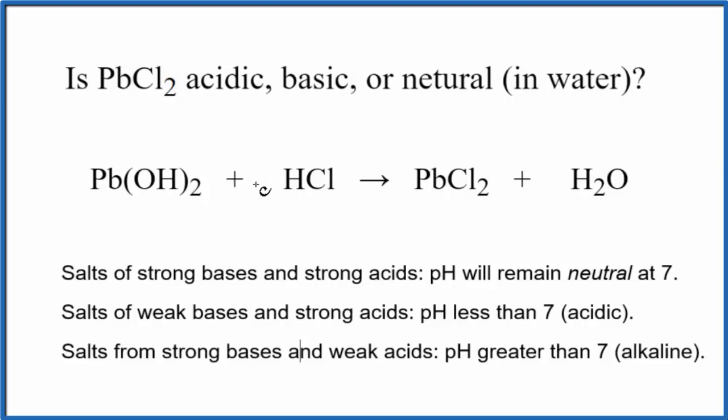To figure that out, first we need to know the neutralization reaction that produces this PbCl2. So we have lead(II) hydroxide, and then we have hydrochloric acid. So we have these two combined in a neutralization reaction, makes lead(II) chloride and water.